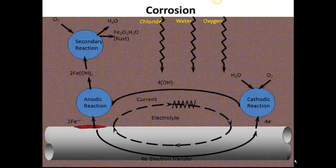So it's this current which is going to be what we're looking for with our testing methods. The half-cell potential testing looks for the voltage change in the active areas.